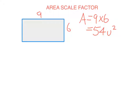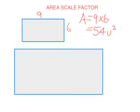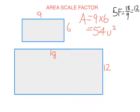Let's look at what happens if I make a similar figure by doubling the length of each side of this rectangle. So the length now becomes 18 and the width becomes 12. These two rectangles are similar figures — because they're both rectangles, all angles are equal to 90 degrees, so they have the same angles, and the sides are in proportion. The scale factor is 2, because it's just 18 divided by 9, or 12 divided by 6.